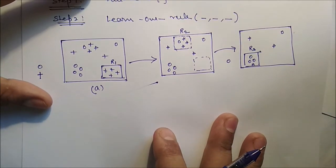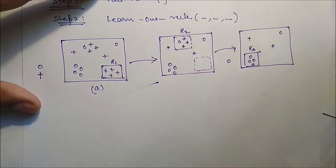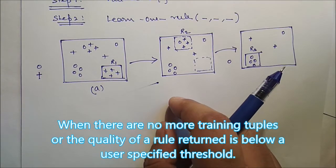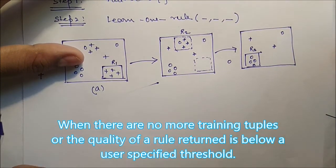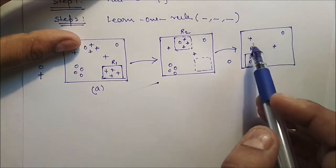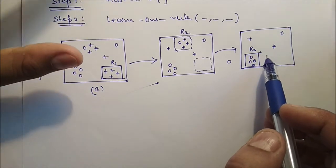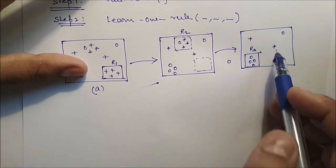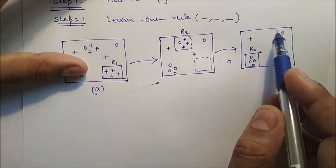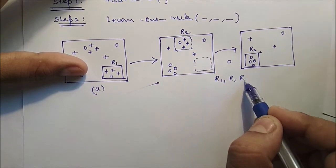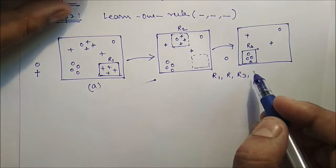The convergence criteria is satisfied when there are no more training tuples or the quality of the tuples removed is below a user-specified threshold. For the three uncovered data points, we can identify a default rule. In this way, we can cover all the data — Rule 1, Rule 2, Rule 3, and a default rule for the three uncovered data points.